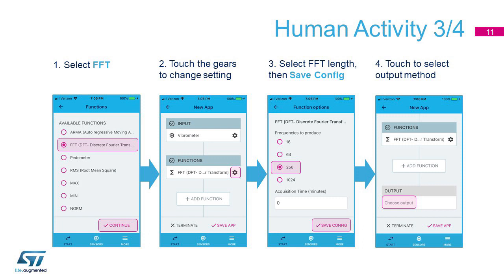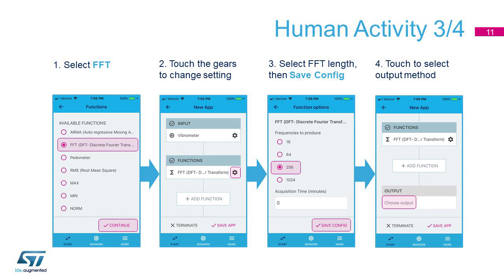Now it is time to set the third step — that means selecting the output. Let's tap Choose Output. The possible outputs are four. Let's choose Stream to Bluetooth, meaning let's see the results in real time with the phone app.